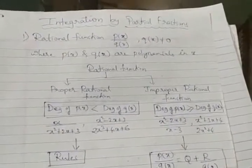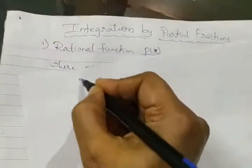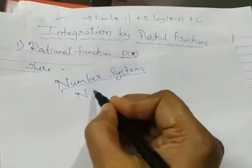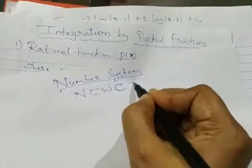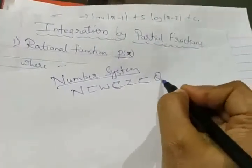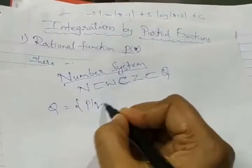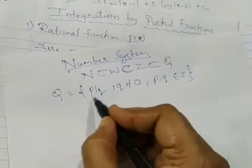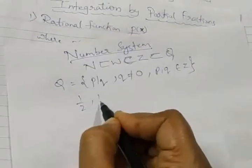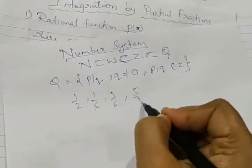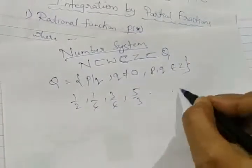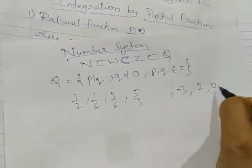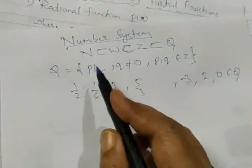Regarding proper and improper, somewhere in the lower class you have come across this in the number system. In the number system, natural numbers are a subset of whole numbers, subset of integers, subset of rational numbers. Rational numbers are in the form of p by q, where q is not equal to zero, and both p and q belong to the set of integers. Examples: one-half, one-fourth, three-fourths, five-thirds, and so on - these are all rational numbers, including integers like minus three and zero.